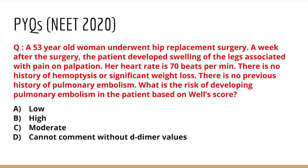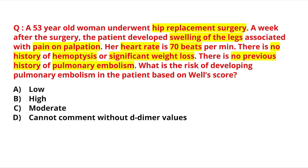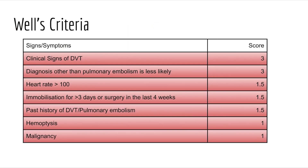First, let us quickly see what Wells Criteria is all about and what scores are to be calculated, so that you can come back to this question and answer it. The Wells Criteria is used to predict whether a person is most likely to develop pulmonary embolism or not. There are seven criteria: clinical signs of DVT gets a score of 3, and diagnosis other than pulmonary embolism being less likely — that is, diagnosis more likely to be PE — also gets a score of 3.